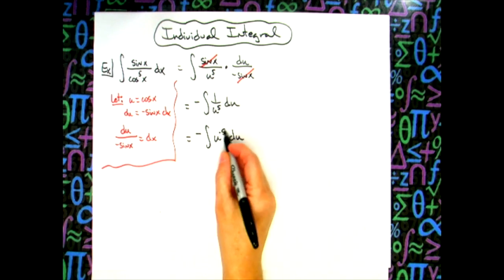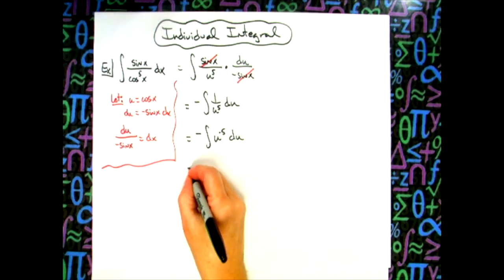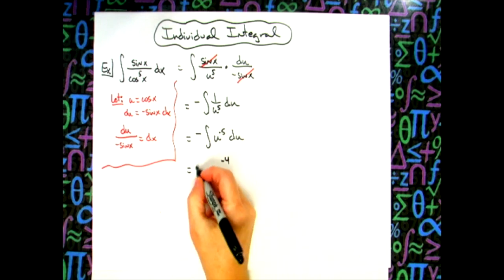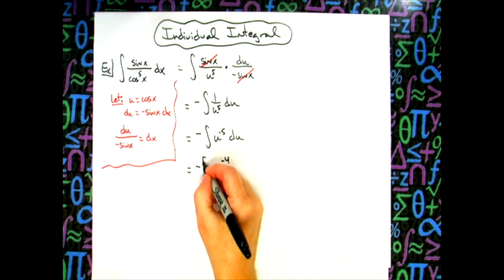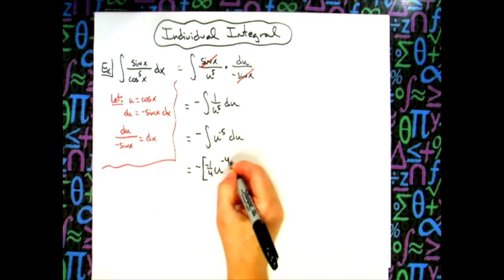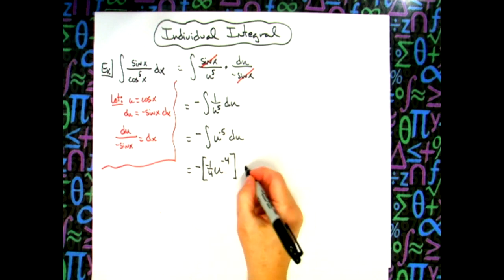Now we are ready to integrate. We can go ahead and add one to that exponent, so when we do that we'll have u to the negative fourth. The negative out here will still be there and then in front here we'll have negative one fourth. Our integration is done so then we can go ahead and add that plus c.